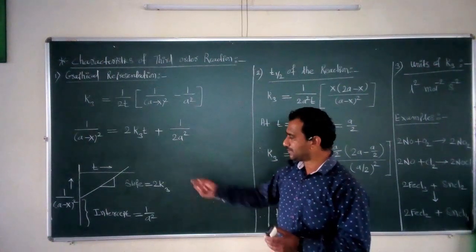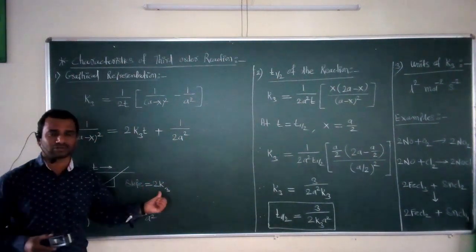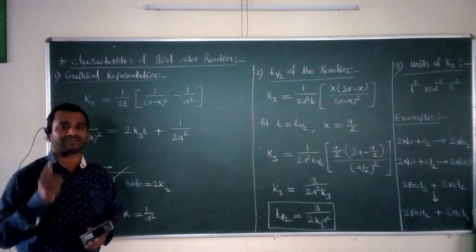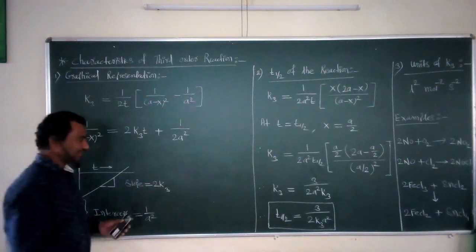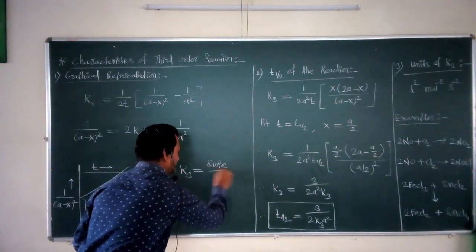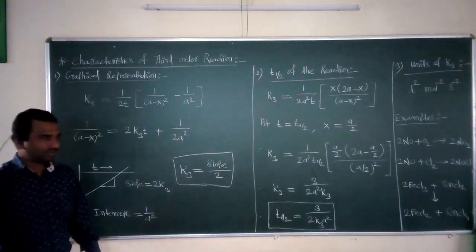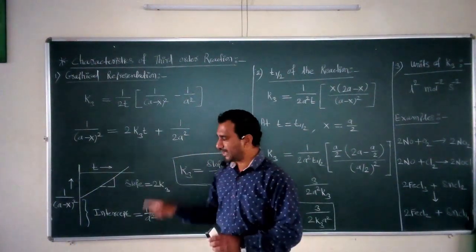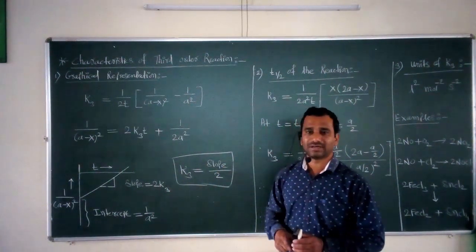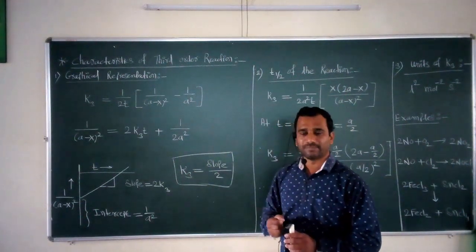From these important values of slope and intercept obtained from the graphical representation, the slope equals 2K3. This value is very important if we want to calculate the rate constant from a graphical method. Since slope = 2K3, therefore K3 = slope / 2. So once we plot a graph of 1/(a−x)² versus time, we get the slope and intercept, and from the slope value we can calculate the rate constant for this third order reaction.